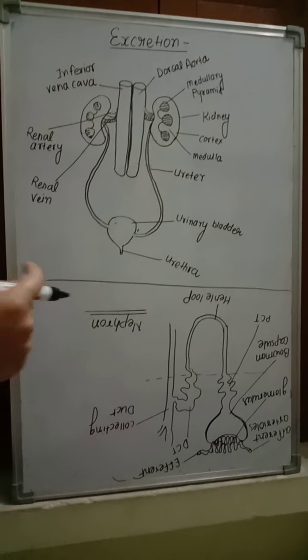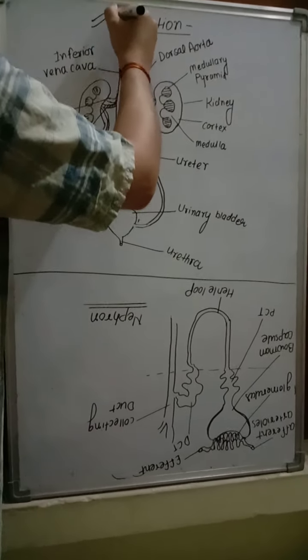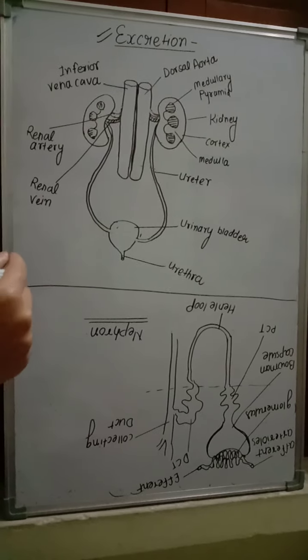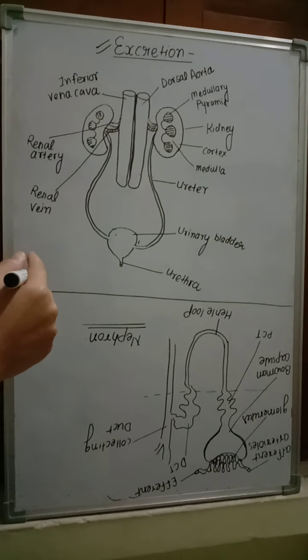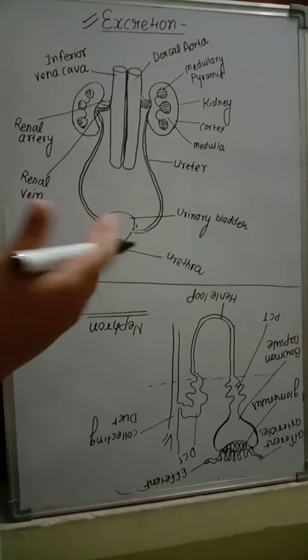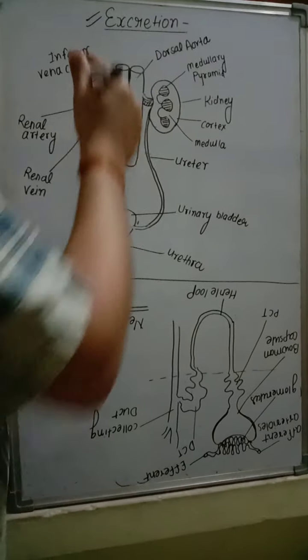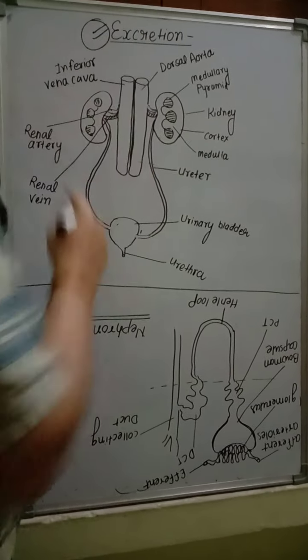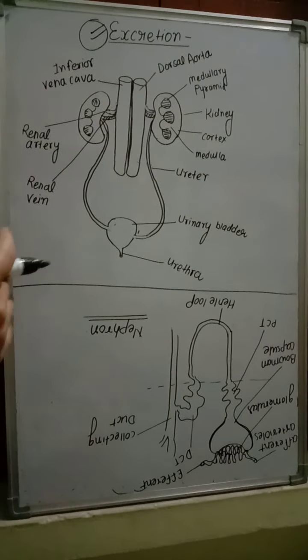To discuss excretion topic, what is excretion? Excretion is a process of removal of nitrogenous waste. What is nitrogenous waste? Like ammonia, urea, uric acid that is produced in body. This is removed by the process of excretion.